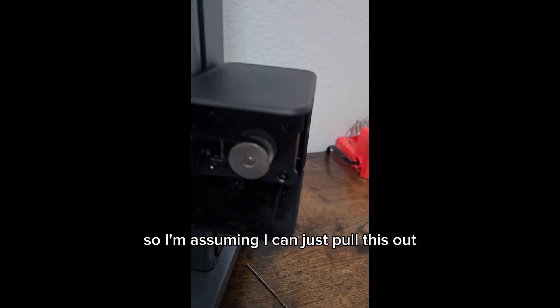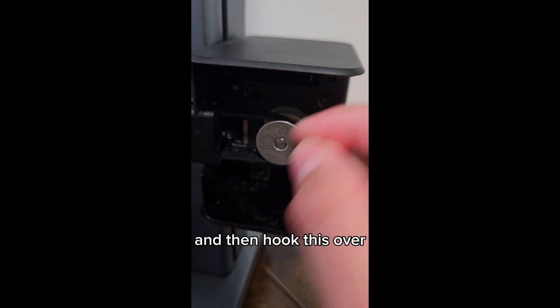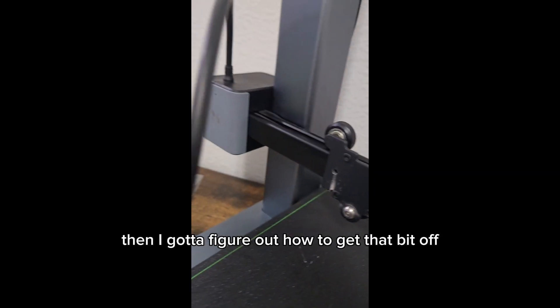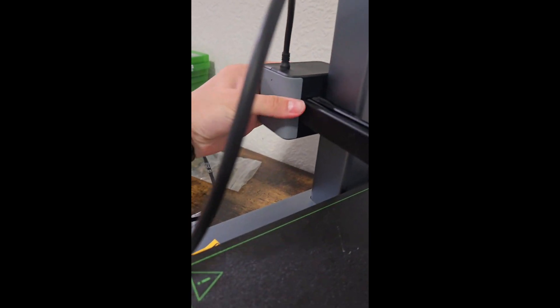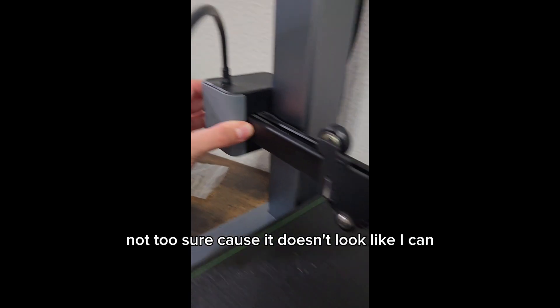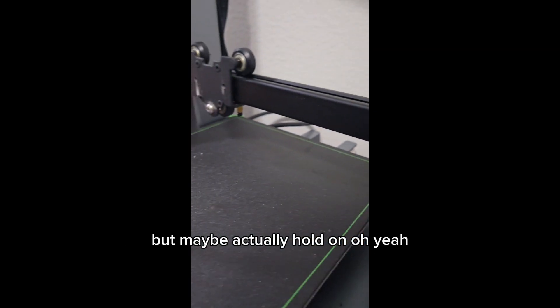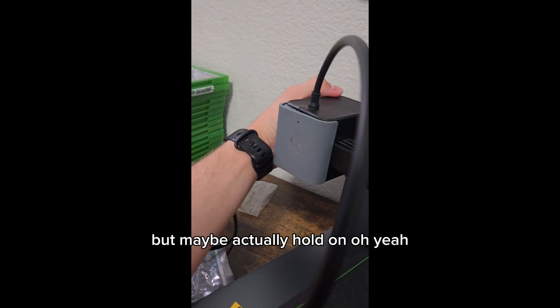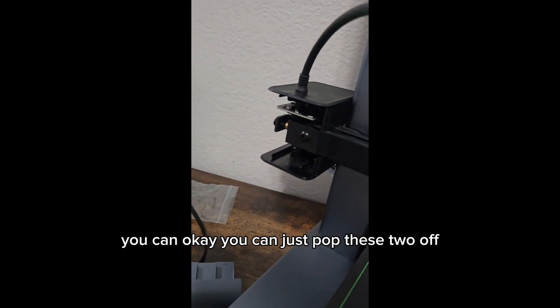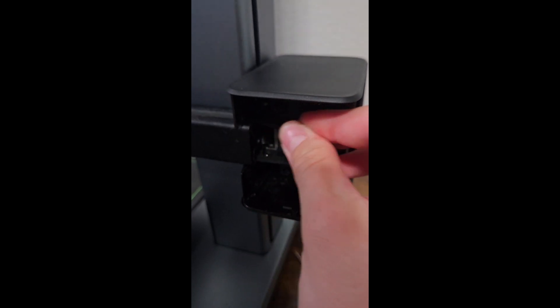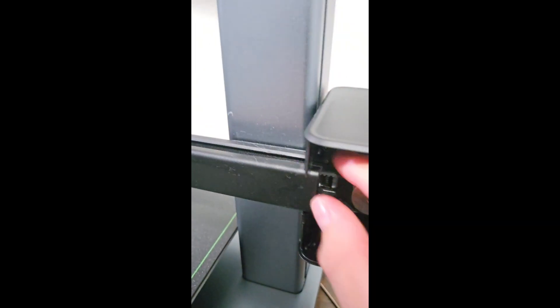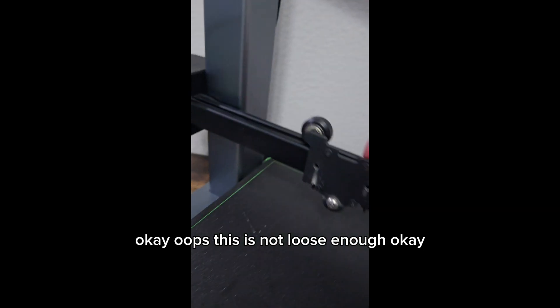So I'm assuming I can just pull this out and then hook this over, then I've got to figure out how to get that bit off. And I think I can actually just do the same thing, I'm not too sure, because it doesn't look like I can, but maybe, yeah you can. You can just pop these two off and then I'm going to take this out and see if I can. This is not loose enough.